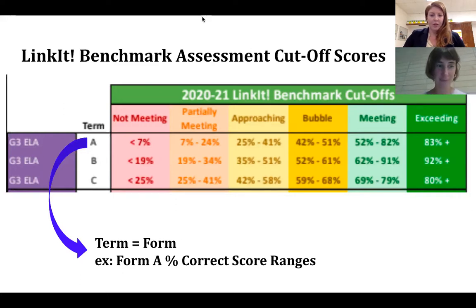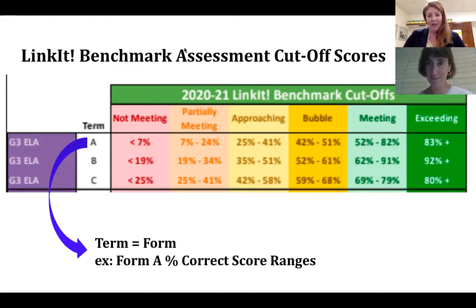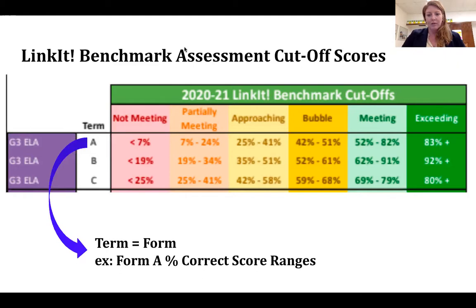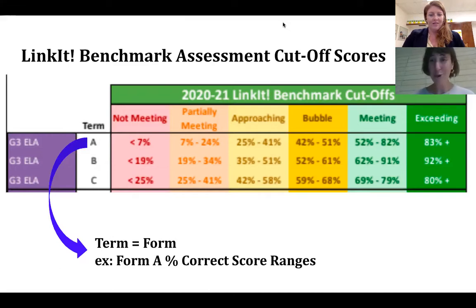A question came in: under what category are students expected to be at the end of the year? Ideally, we'd love to see all students meeting grade-level expectations. We're really hoping students are in that meeting or bubble range, or as close to that as possible — mastering and understanding the skills and content for their grade level. For any student, wherever they are, we don't want to see regression. If a student starts at partially meeting, we want them to be better than partially meeting by the end of the year.